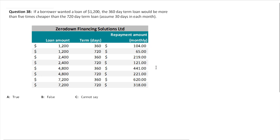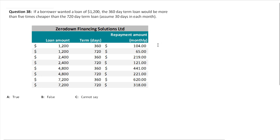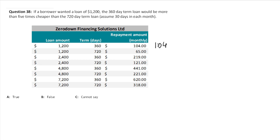We need to work out the net interest payable on both. For the first one, the monthly amount is $104. So it's going to be $104 times how many months — that's 360 divided by 30 — giving us 104 times 12. We also need to subtract the loan amount because we are working out the interest, so minus $1,200. That gives us $48.